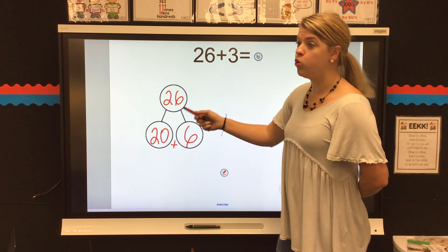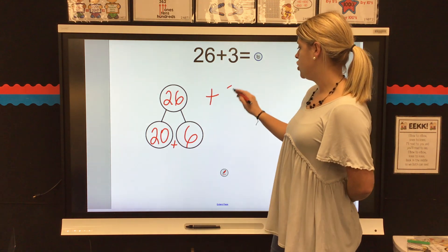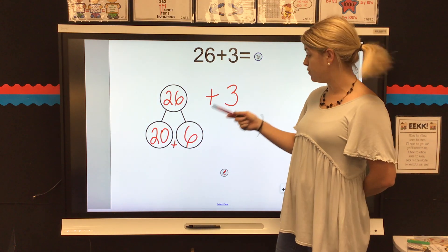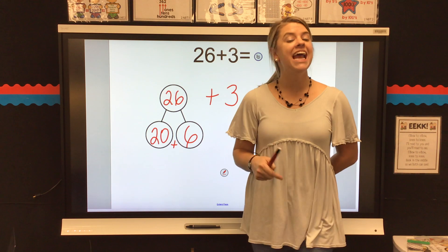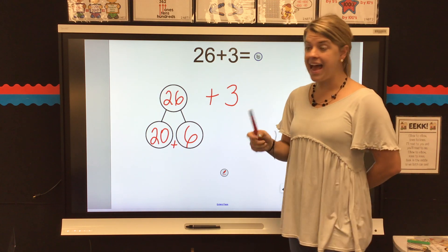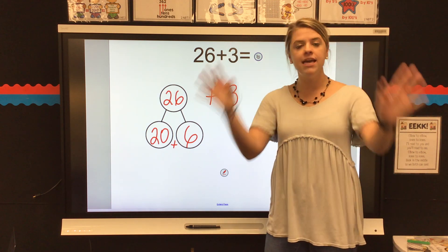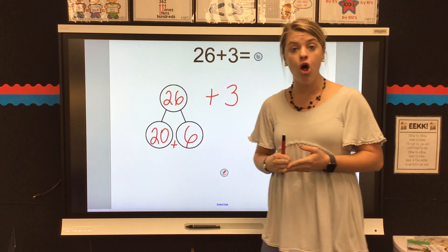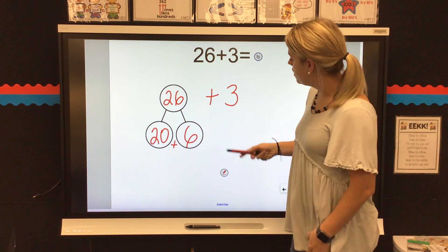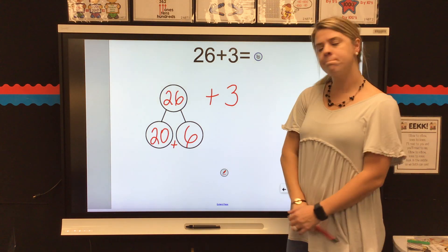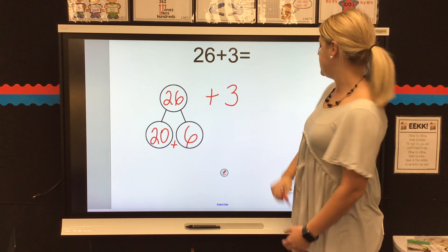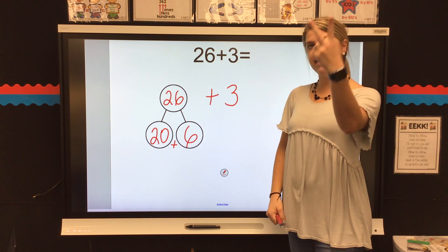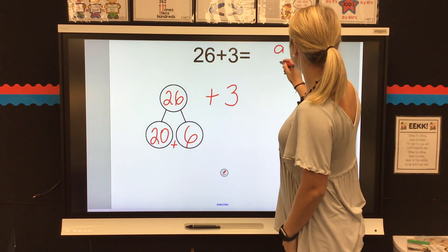So, now we're going to do 26 plus 3, but we're going to do it like this, 20 plus 6 plus 3. Now, it's way easier for me to add because I'm going to start with my ones because anytime I'm adding anything with a two-digit number in it, I'm always going to start with the ones. So, I have three ones and six ones. Three ones and six ones. Six, seven, eight, nine. So I have nine ones.